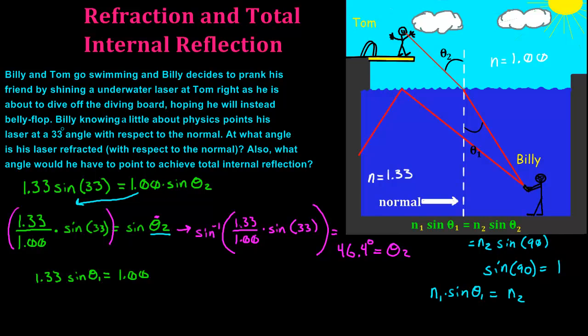So this time, we take this 1.33 and we throw it over here on this side. So we get 1.00 divided by 1.33 is going to equal our sine theta1.